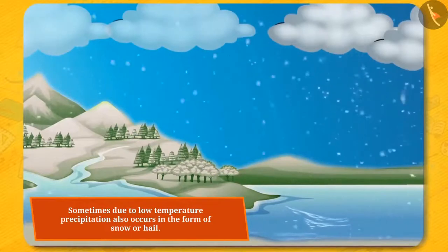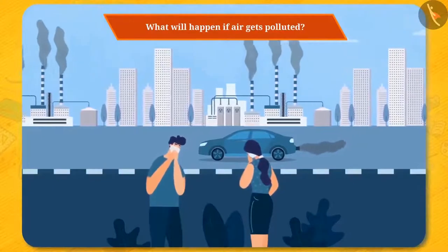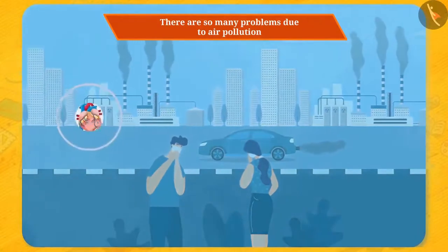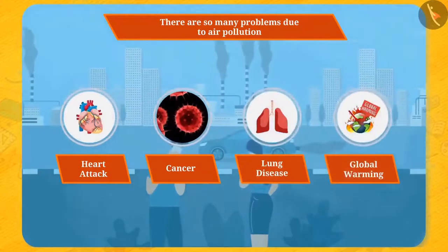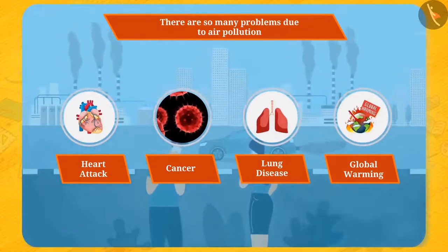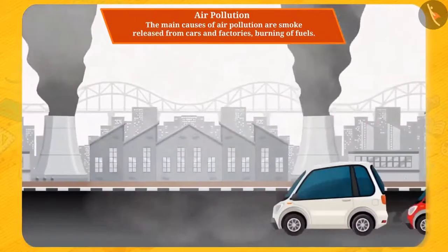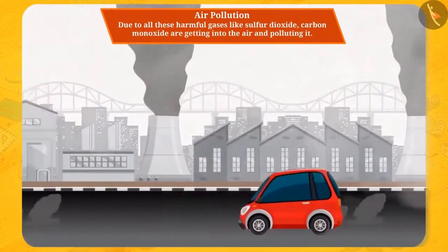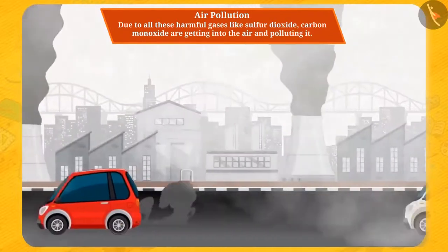There is no doubt air is very important for us. But what will happen if it gets polluted? There are so many problems due to air pollution like heart attack, cancer, lung disease, global warming, etc. The main causes of air pollution are smoke released from cars and factories and the burning of fuels. Due to all these, harmful gases like sulphur dioxide and carbon monoxide are getting into the air and polluting it.